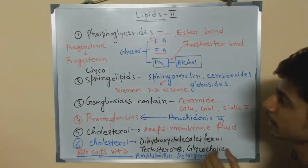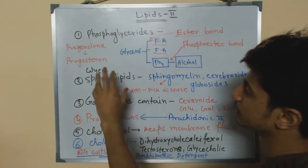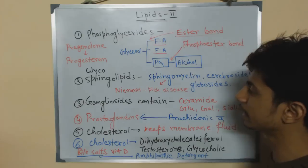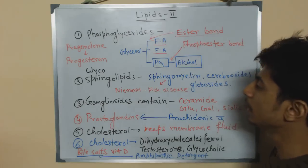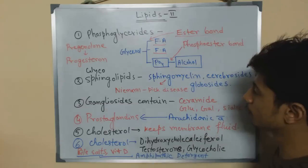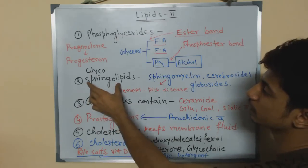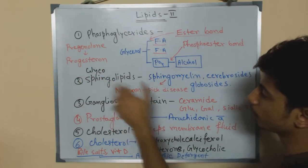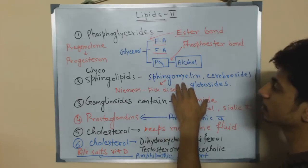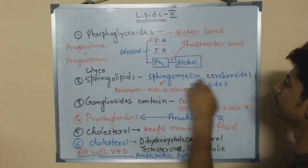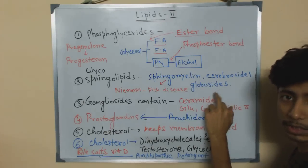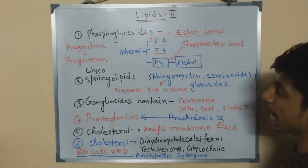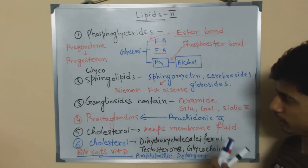Next are sphingolipids, which are very common. These are called glycosphingolipids, and examples include sphingomyelin, cerebrosides, and globosides. These are the key examples of glycosphingolipids.